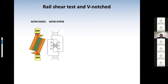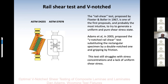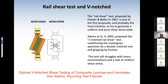The first test I will discuss is the rail shear test and the Vinochet rail shear. The test was originally proposed in 1967 and is probably the most intuitive attempt to generate a pure shear stress state. Adam Settar, in 2003, proposed the Vinochet rail shear test, substituting the rectangular specimen with a double-notched one and gripping by friction. This test still struggles with stress concentrations and a lack of uniform shear stresses. This test will be covered by Dan Adams from Wyoming Test Fixtures, who will talk first.